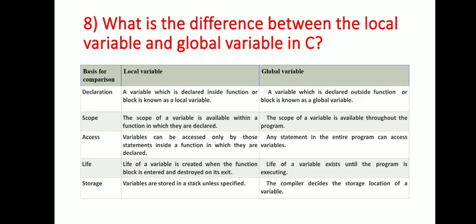Next question: what is the difference between local variable and global variable in C? A variable declared inside a function or block is known as a local variable. A variable declared outside the function or block is known as a global variable. The scope of a local variable is available only within the function in which it is declared, while the scope of a global variable is available throughout the program.